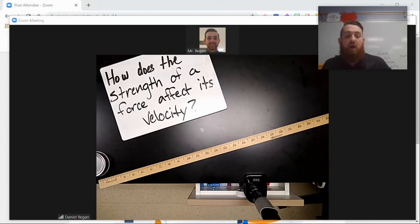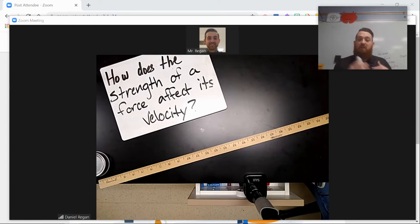We are going to be observing the dependent variable or the change of velocity we have with our jar lid at the three different strengths. So that would be our dependent variable.